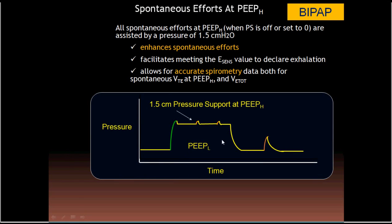Some ventilators, when there is no pressure support set at the high CPAP level, will automatically assist with 1.5 cm of pressure support at the high level.